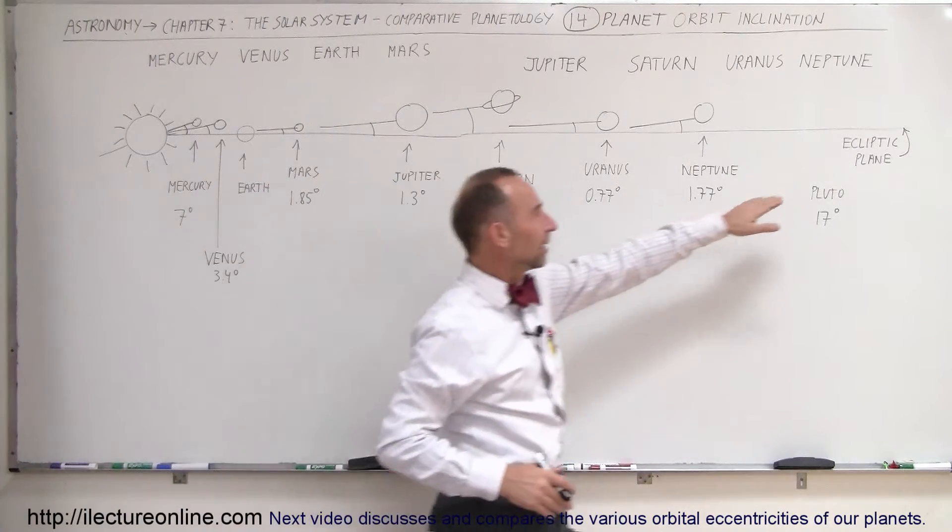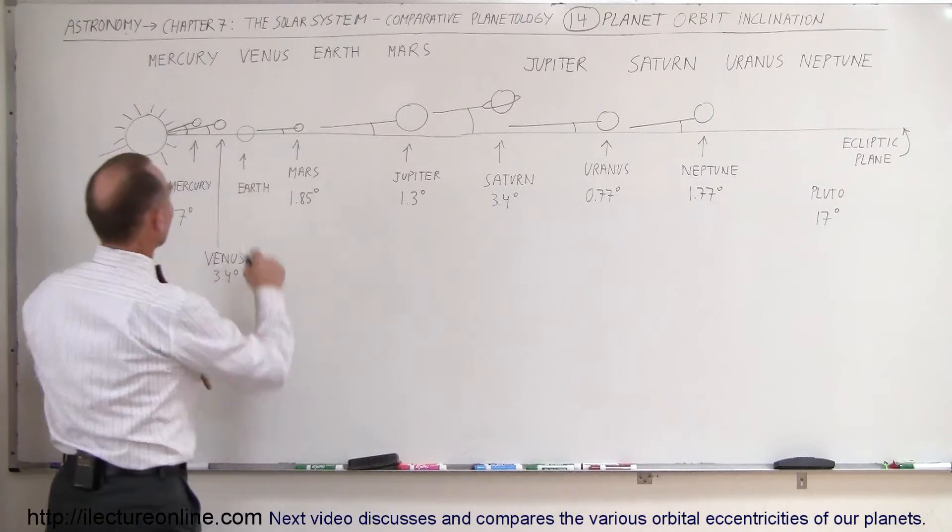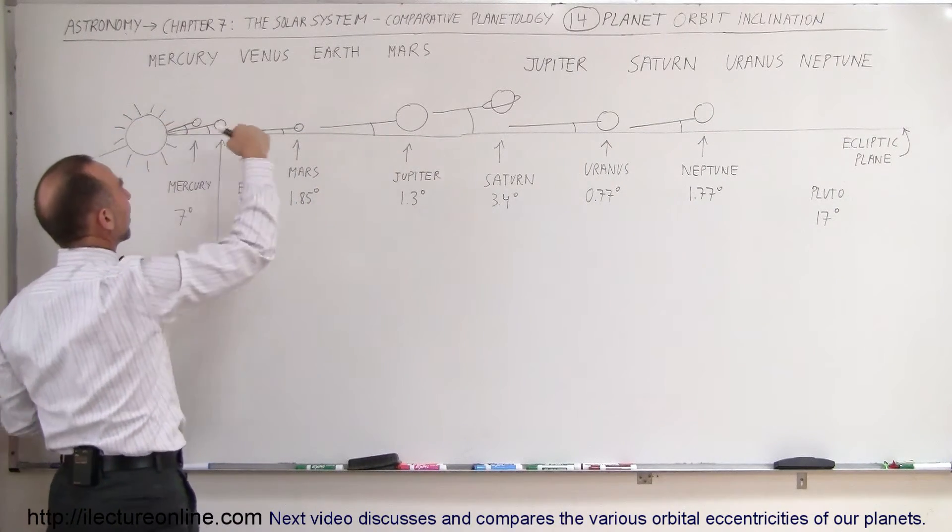And so here I have the explanation here, ecliptic plane. It's the plane that the Earth, and where's the Earth? Right here. Here's the Earth, where the Earth goes around the Sun.